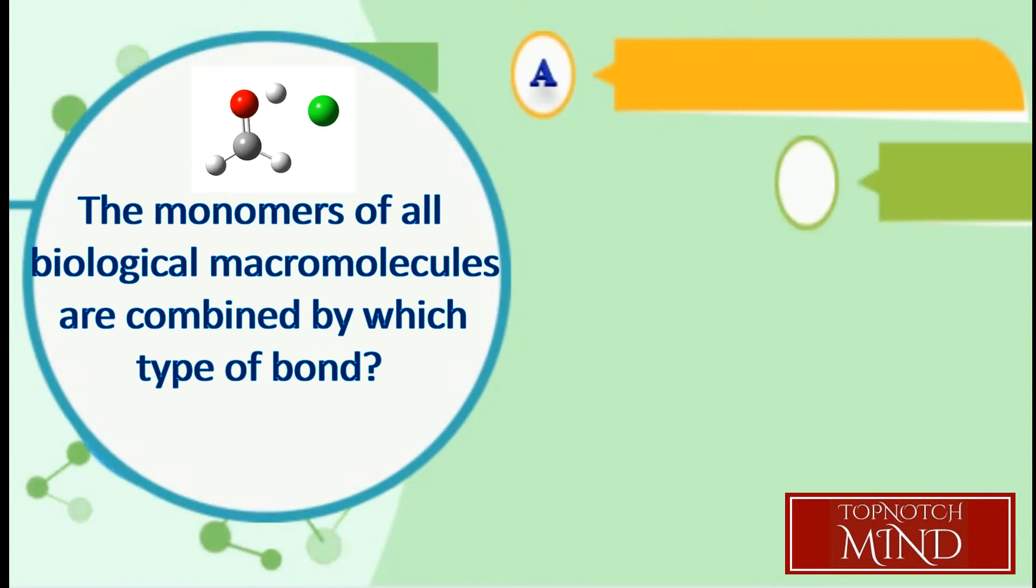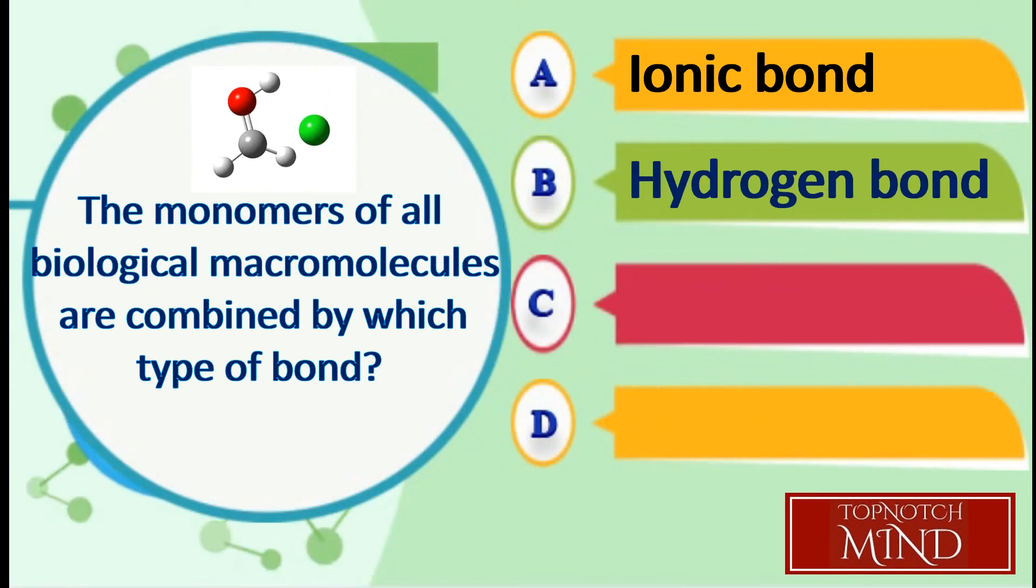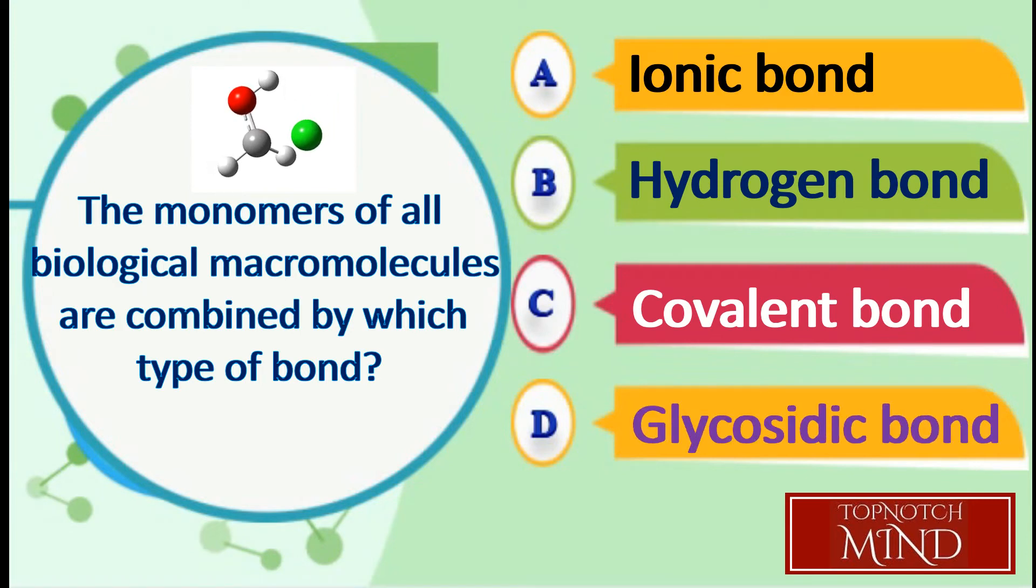The monomers of all biological macromolecules are combined by which type of bond? A. Ionic Bond, B. Hydrogen Bond, C. Covalent Bond, D. Glycosidic Bond.